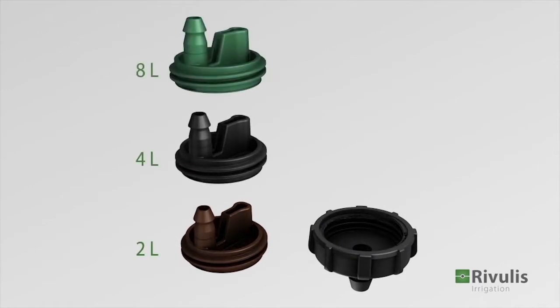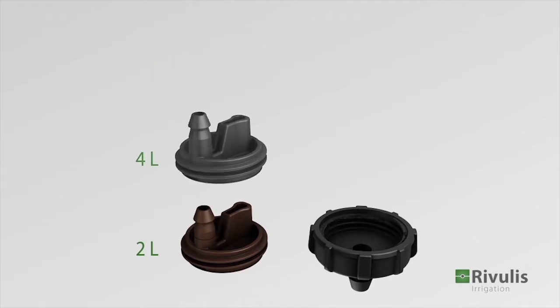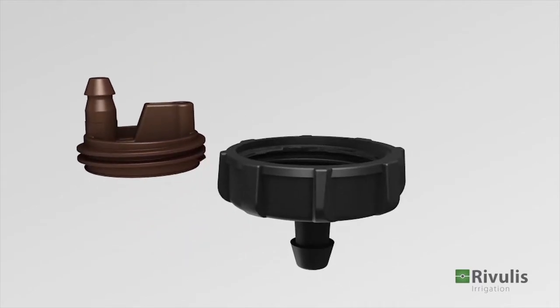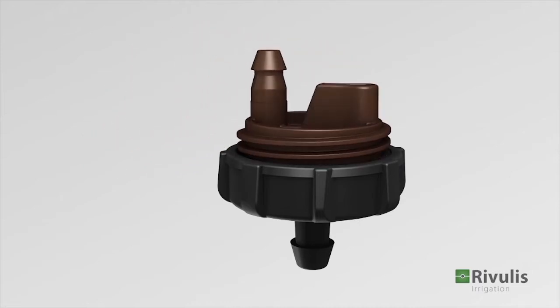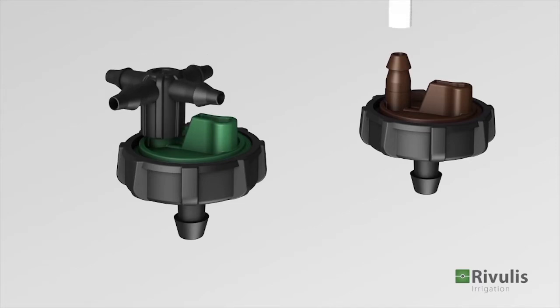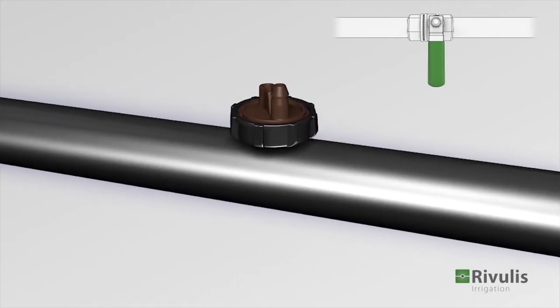Three color-coded covers allow for easy identification of various flow rates. The outlet on the cover can be used with a branching adapter or with an easy to insert three by five millimeter micro tube. The water from the drip line enters the dripper through the filter at the bottom.